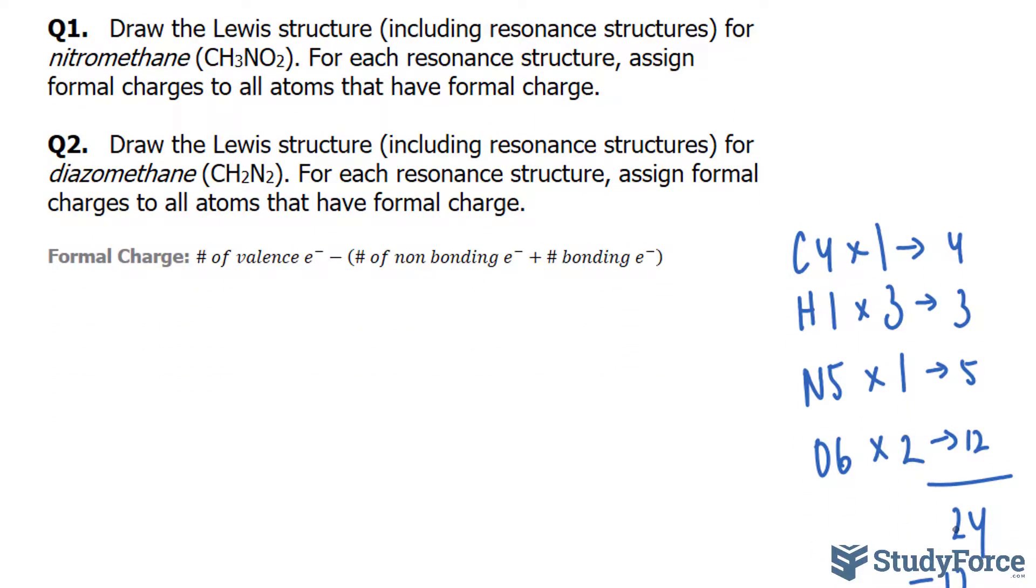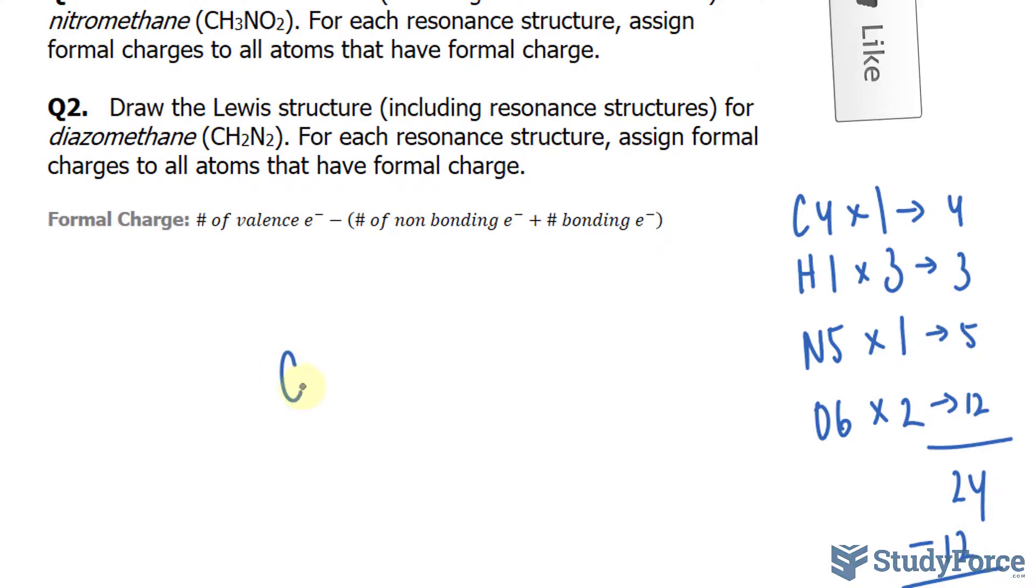With that being said, when drawing Lewis structures for organic compounds, the order in which the atoms are in dictates how they look in that structure. Starting with CH2, we have the central atom C with the two hydrogens. They already have a complete octet, and four electrons have been used up, and that's connected to nitrogen and another nitrogen.